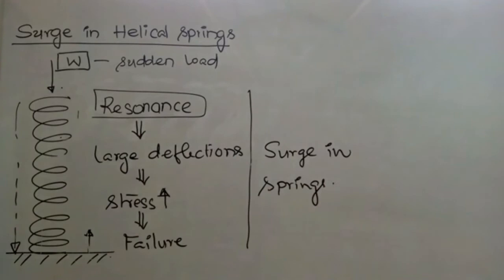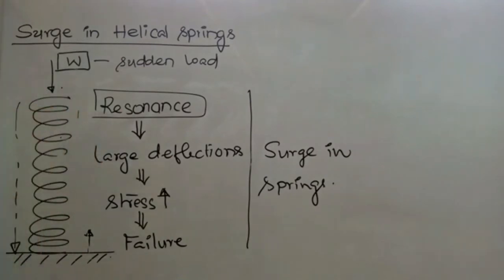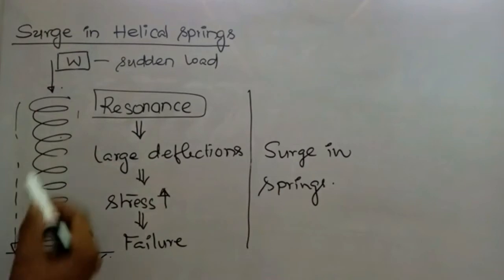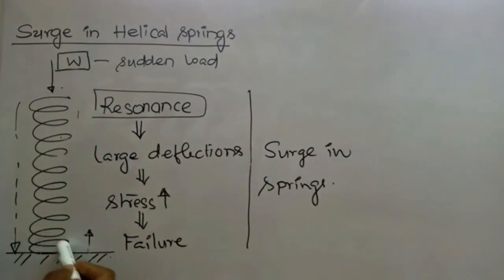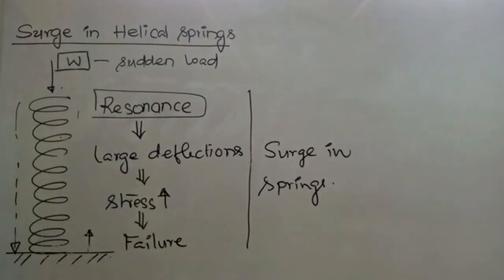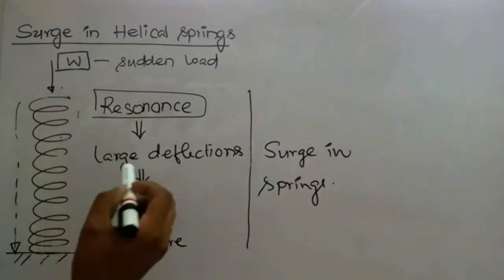Let us take a compression helical spring which is fixed at the bottom end and free at the top end. A suddenly applied load is acting on the free end of the spring. The entire deflection is produced in the topmost coil, and the deflection is transmitted to the adjacent coils slowly. It propagates until it reaches the supported end, where the deflection once again reflects back to the topmost loaded coil.